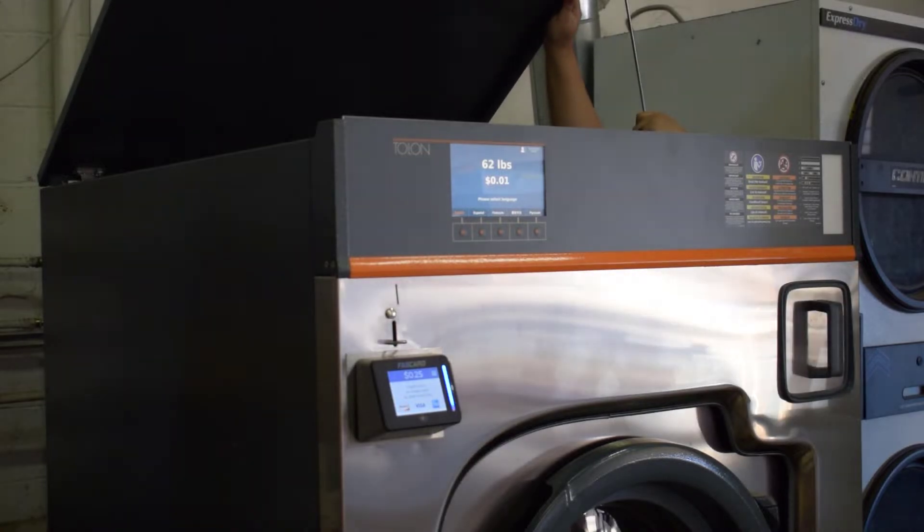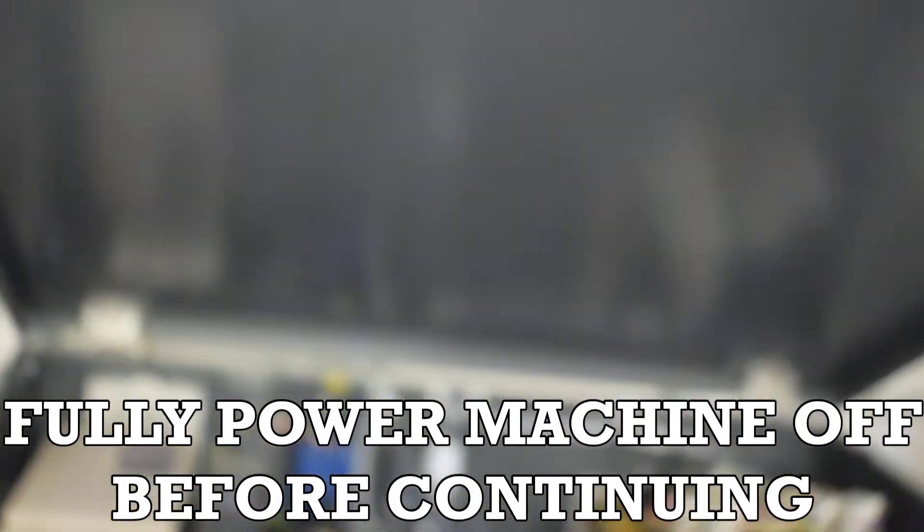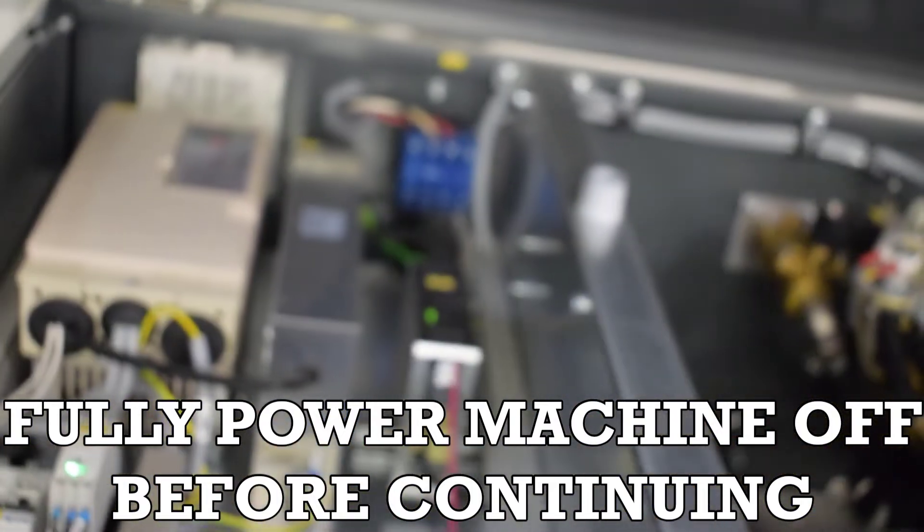In a previous video, I covered how to tap power for readers on FasCard or FLEX systems. In this instance, the required harness only uses two wires and connects to one location, the power supply.